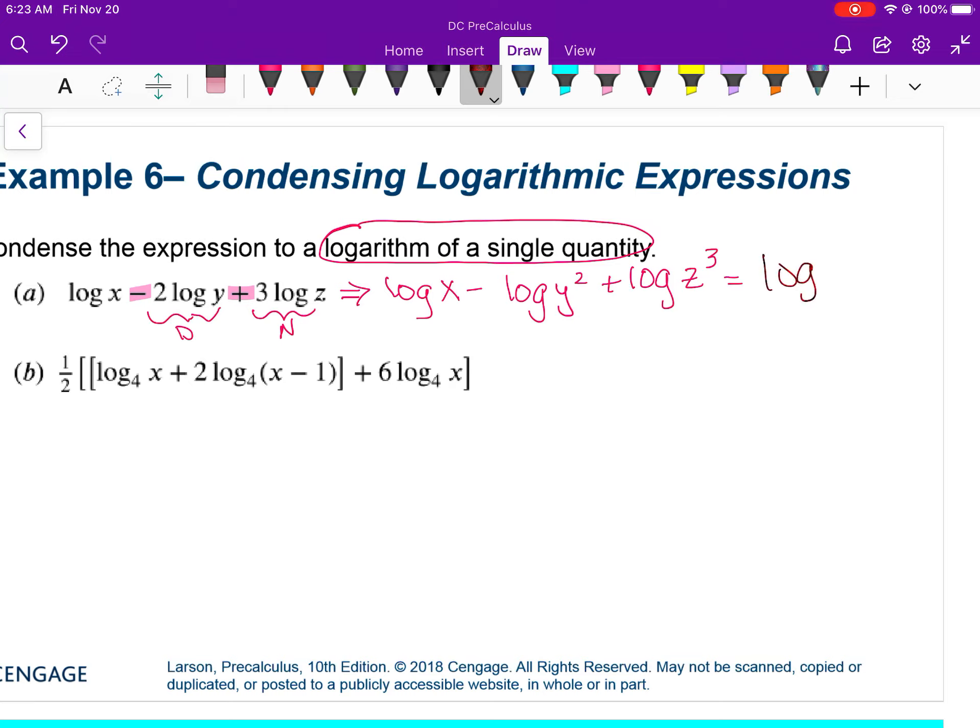So we decided that this is a positive term, so that's going to go in the numerator. So it'd be the log of x. This, remember, goes in the denominator: y squared. Remember this went in the numerator because it has a plus sign in front, so that'd be z to the third.